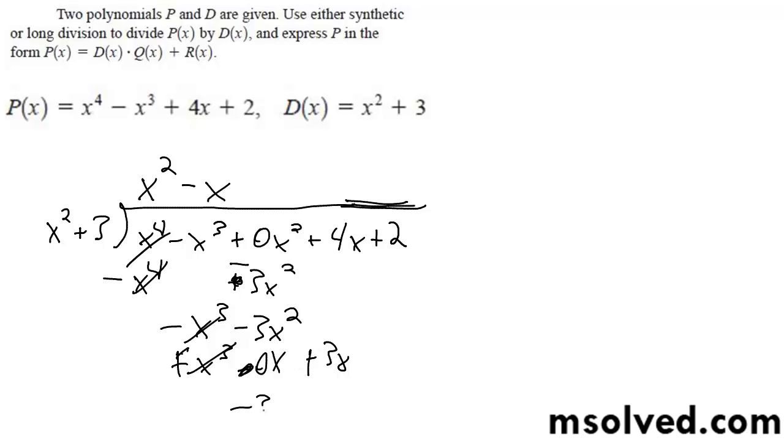So this becomes plus. You get negative three x squared plus seven x, and it goes into that minus three times.